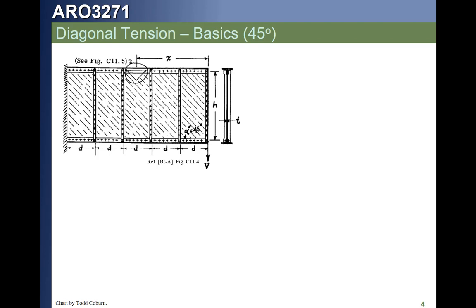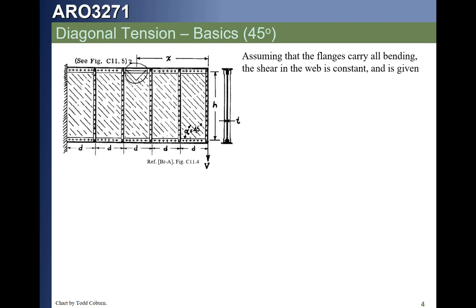Let's assume we already have a diagonal tension field where we've buckled in one 45-degree direction and the other direction is carrying the remainder of the load in tension. We assume that the flanges carry all bending and the shear is carried by the web, so the shear stress is just V over HT. This is how we analyze both shear-resistant beams and diagonal tension beams — we start with this check.